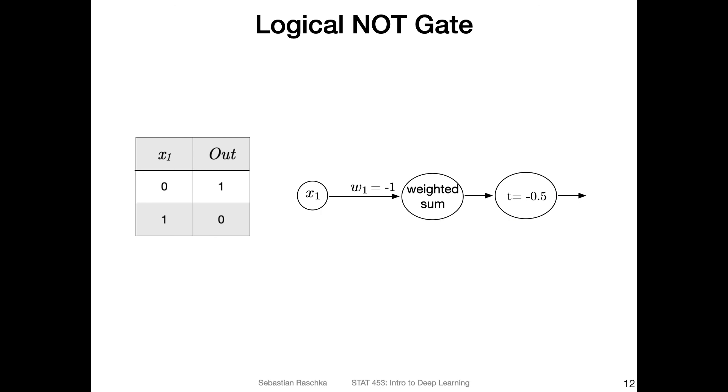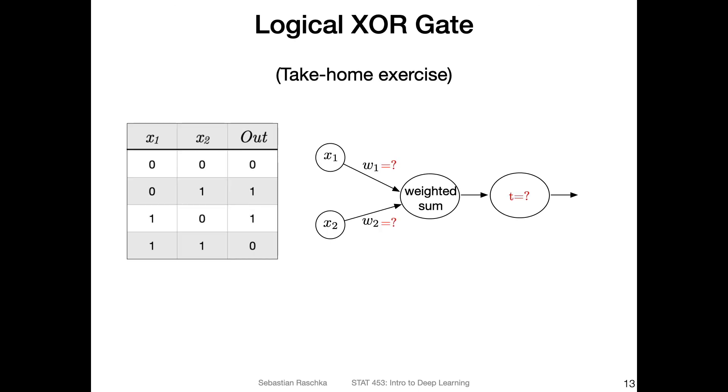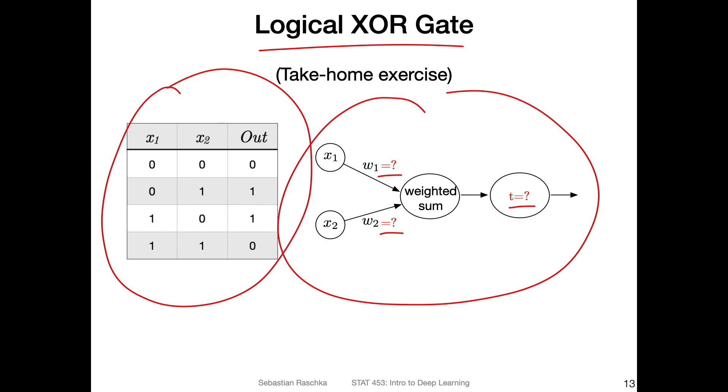You can also implement a NOT gate. So I don't want to go into too much detail here. But you can walk through this, maybe by yourself. And then another one is a take home exercise. Can you implement a logical XOR function using this McCulloch Pitts neuron? So here's the table of an XOR function. Can you find weights and can you find a threshold such that this simple model here can implement the XOR gate as an ungraded homework exercise? You can maybe post on Piazza in a few days to see whether this is possible or not.